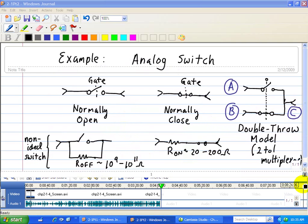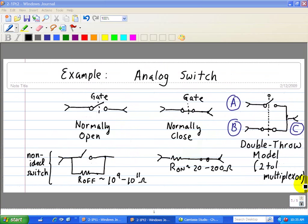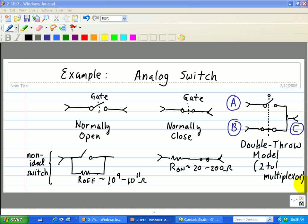Okay, let's look at an example called an analog switch. And basically, it's an important device that's used in analog to digital interfaces. Here, we have two different versions, one that is normally open and one is called normally closed. That is, it's normally open when there's no applied voltage through this gate.